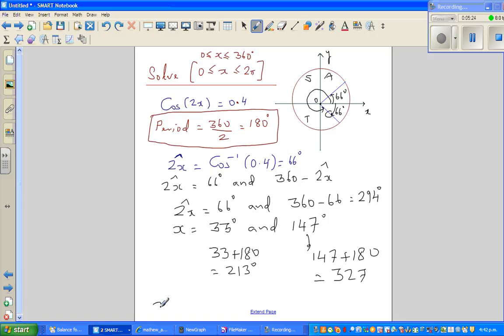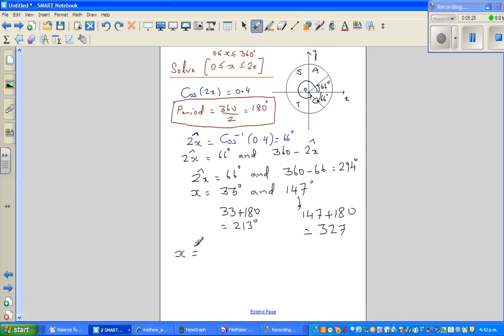And this fourth angle would be 147 plus 180. So it's 147 plus 180, which is 327 degrees. The answers are 33 degrees, 147 degrees, 213 degrees, and finally 327 degrees.